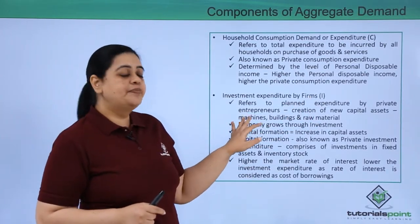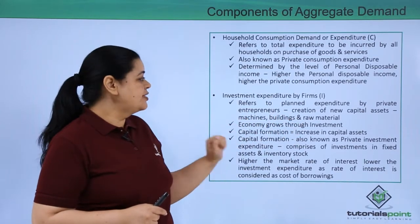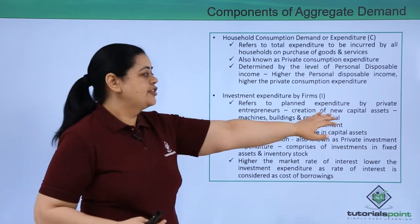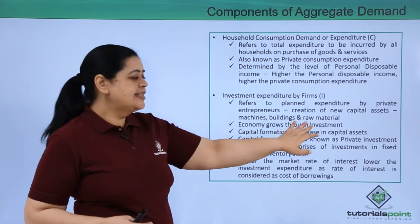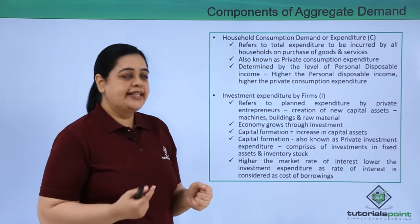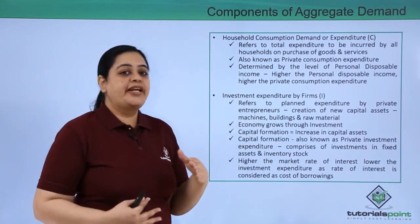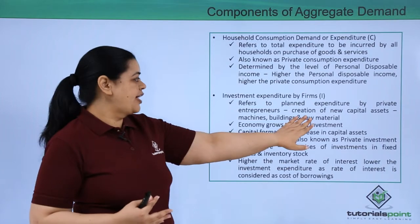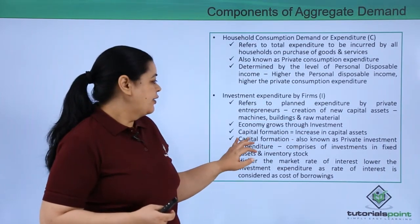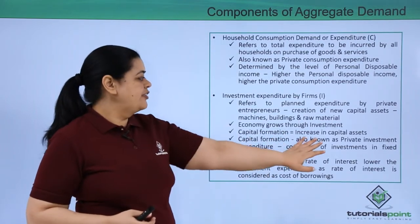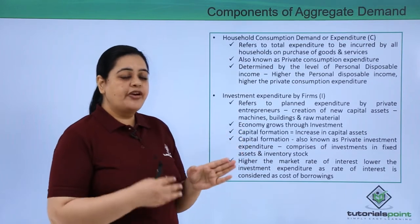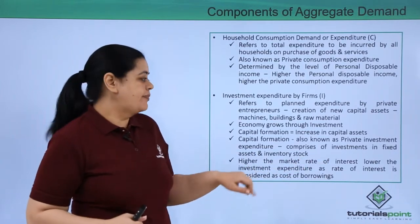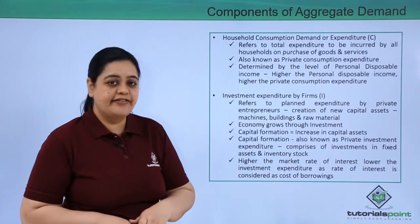The second component is investment expenditure by firms, represented by I. This refers to expenditure by private entrepreneurs on fixed assets like plant and machinery — essentially the creation of new capital assets such as raw materials, machines, and buildings. Whenever such investment expenditure is done, the economy grows because it helps in increasing output. Capital formation results in an increase in capital assets. This is also known as private investment expenditure, and it comprises investments in fixed assets and inventory stock.